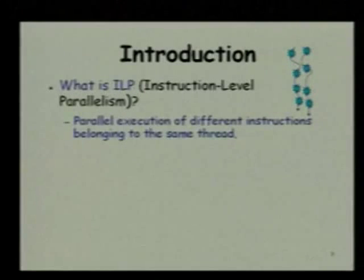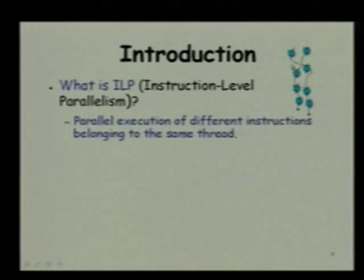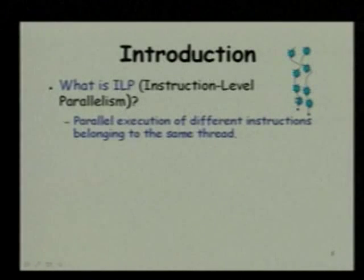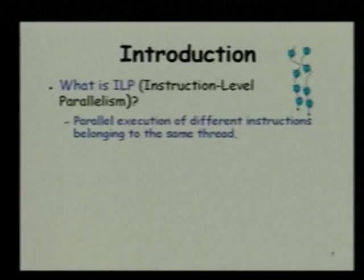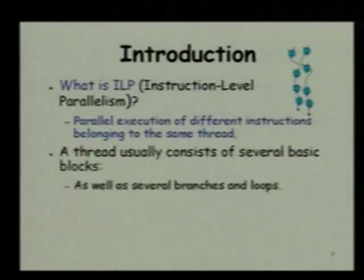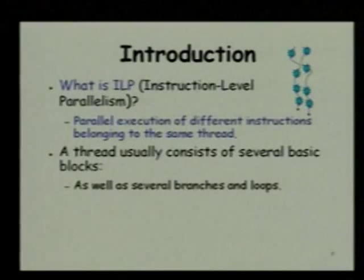First let us recapture what we are doing. We had defined what is instruction level parallelism. We had said that if there are independent threads, then for each thread we are considering our attention to one thread. So, the instructions that are present on a single thread, if they can be executed in parallel — we are not considering different threads, we are considering the same thread — instructions belonging to the same thread being executed concurrently or in an overlapped fashion, then we have instruction level parallelism. And a thread consists of basic blocks and also branches, loops and so on.